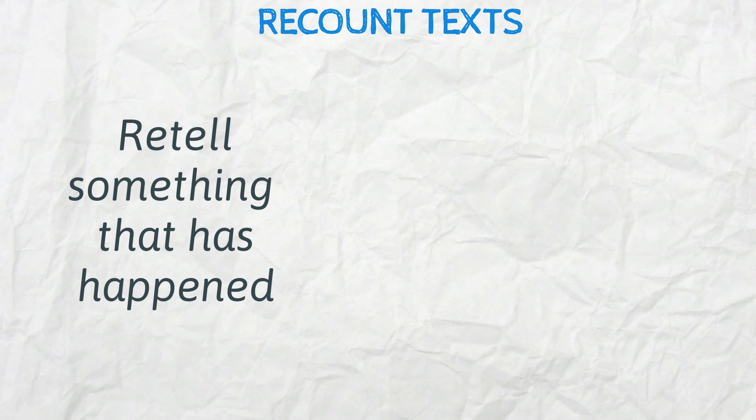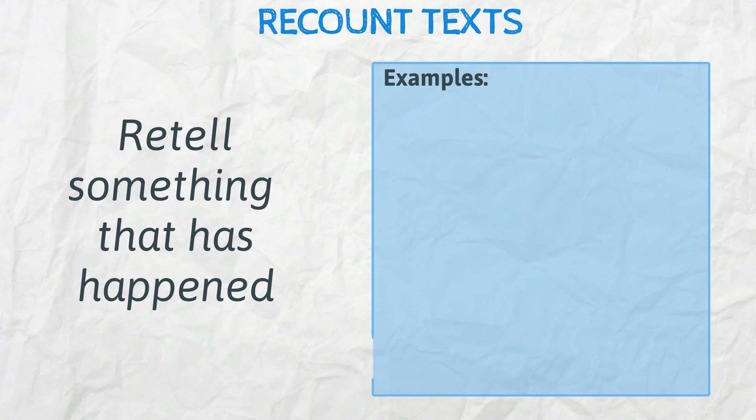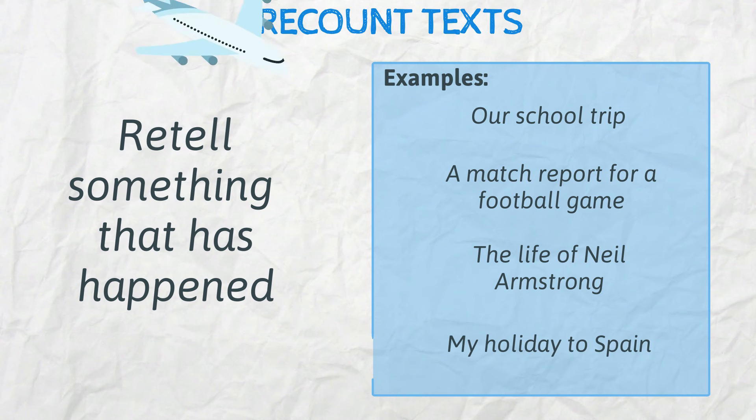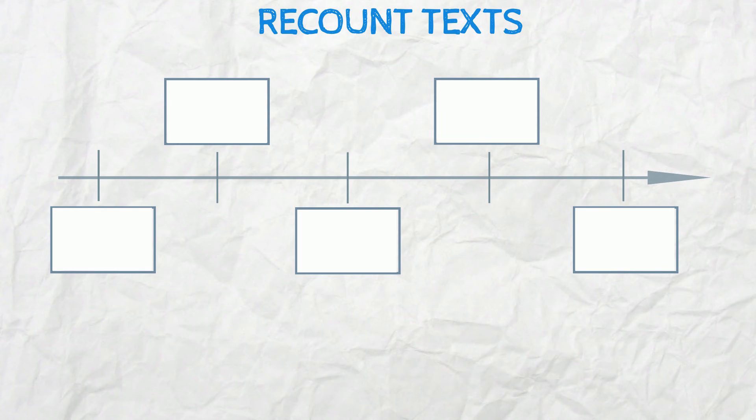Recount texts. Recount texts retell something that has happened. This is usually done in chronological order, which means in the order in which it happened. Examples of recount texts are: Our school trip, a match report for a football game, the life of Neil Armstrong, my holiday to Spain. A good way to plan a recount is along a timeline, with events going from left to right in the order that they occurred. Group your information into manageable chunks.